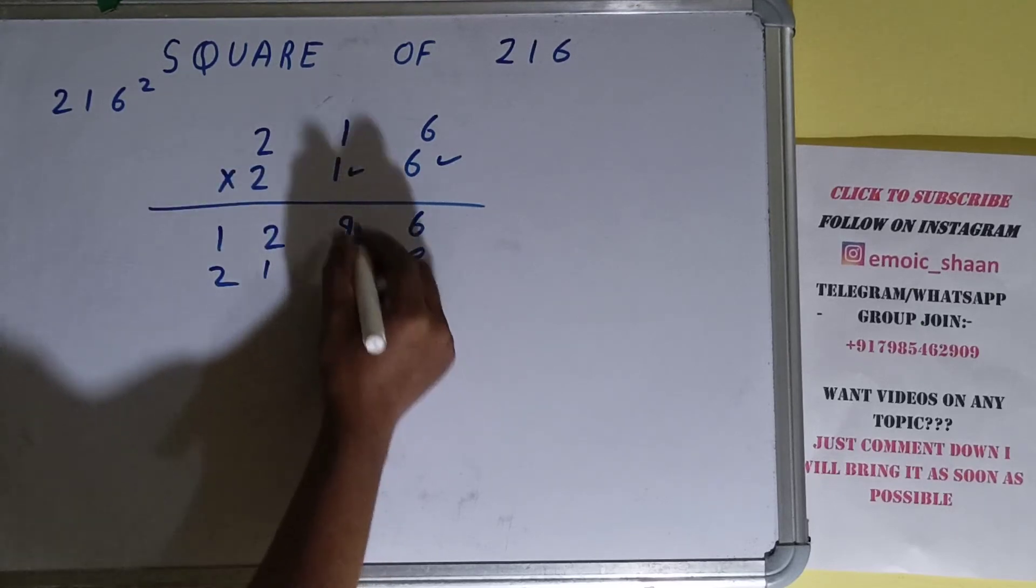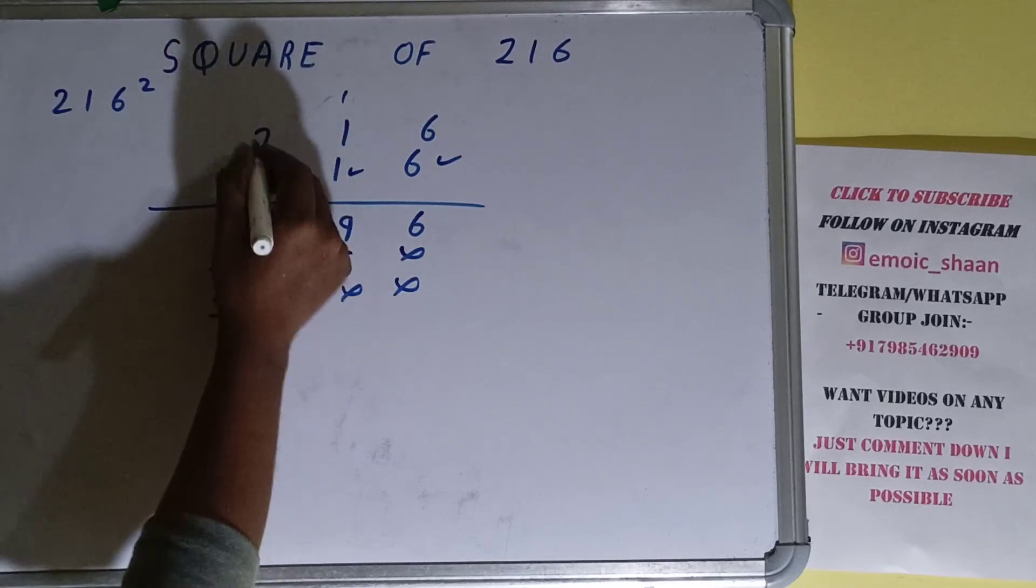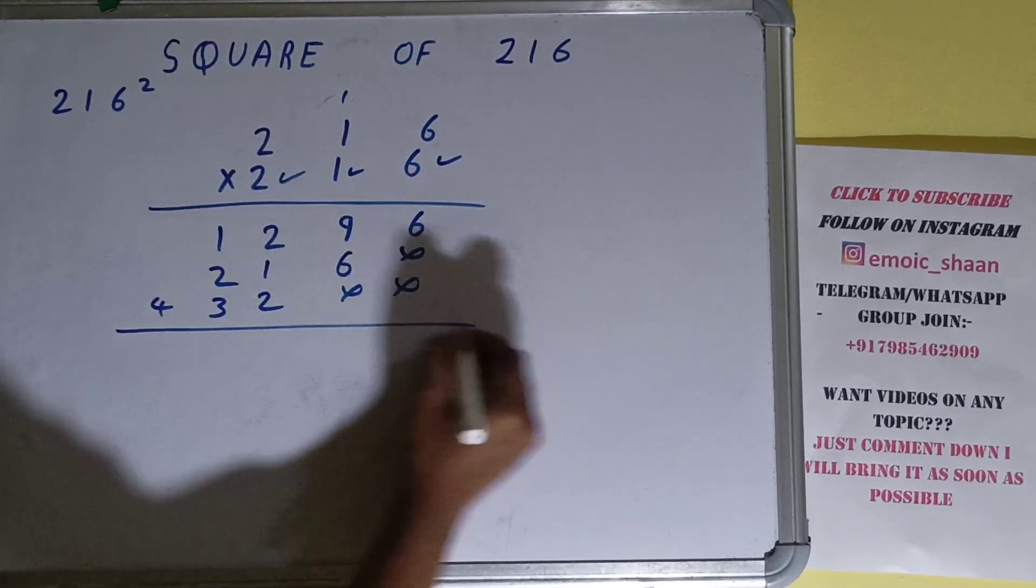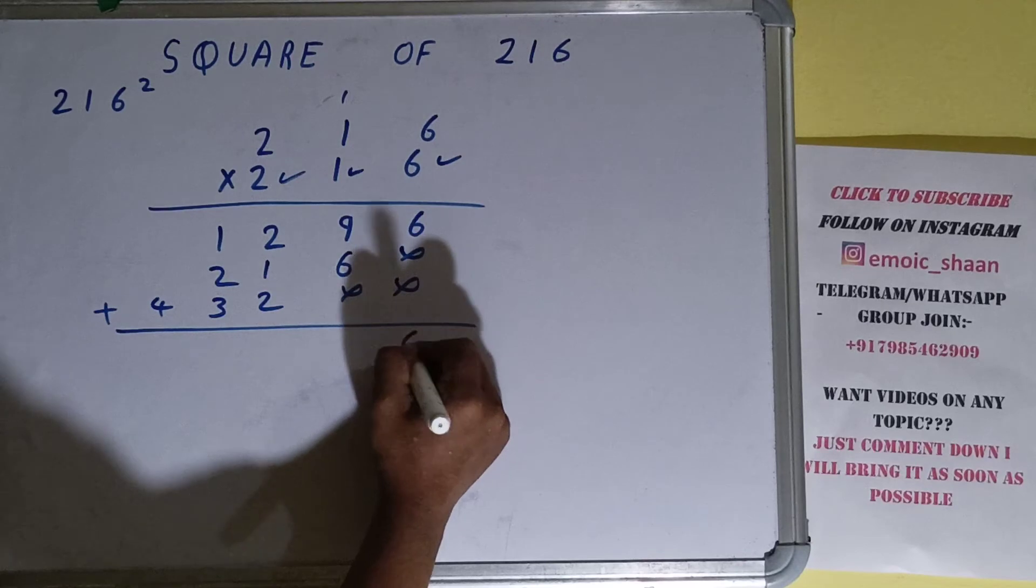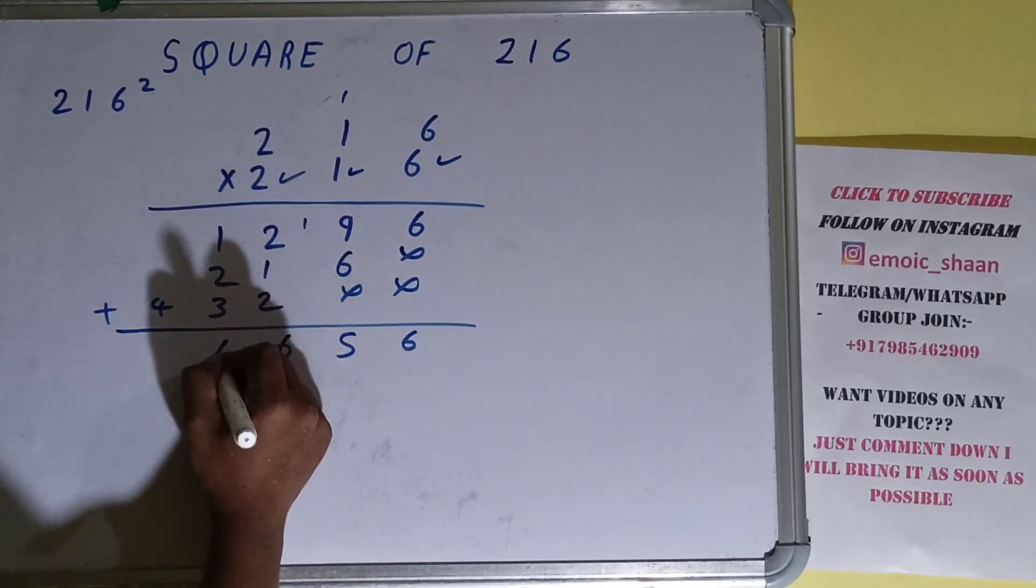And now this 2. 6 times 2 is 12, carry 1, write 2. Then 1 times 2 is 2, plus carry is 3. And 2 times 2 is 4. Just add everything: this will be 6, this will be 5, this will be 6, this will be 6.